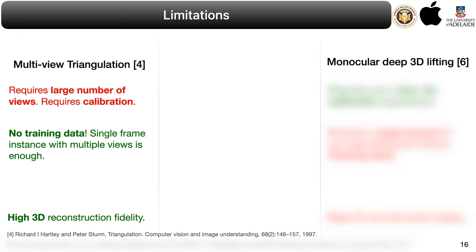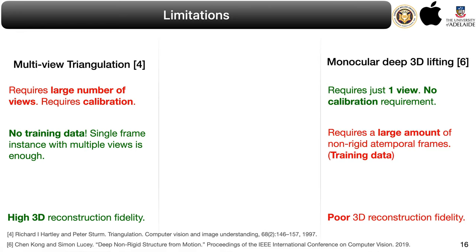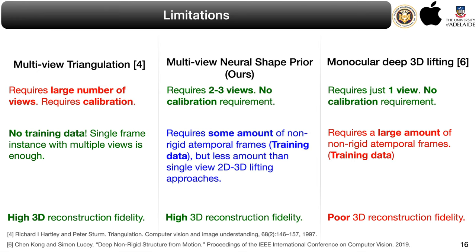Compared to that, even though the single-view 2D to 3D lifting methods address the cost and complexity limitations, they end up giving very poor 3D reconstructions. Our approach combines the best of both worlds: namely, if calibration is unknown or the number of views is sparse, our approach is of significant benefit. Although our approach is limited in comparison to triangulation as it requires some amount of training data, it requires substantially fewer instances compared to single-view approaches and provides 3D reconstruction performance comparable to complex multi-view rigs.